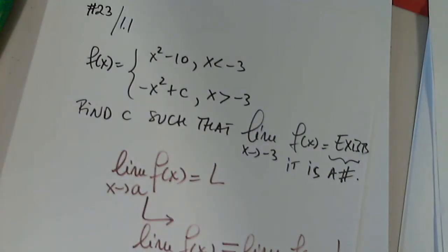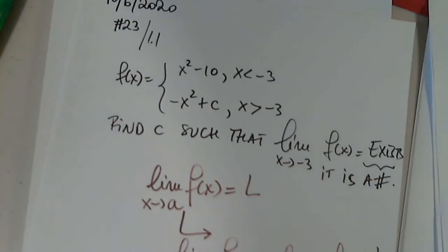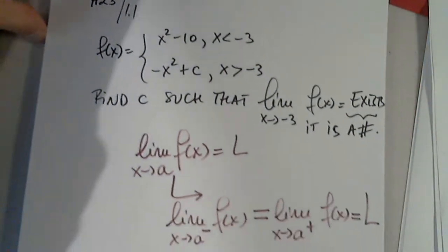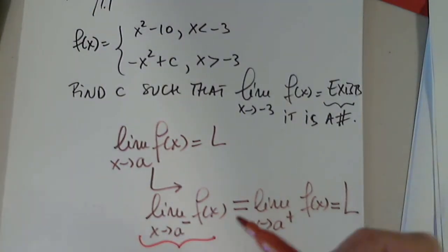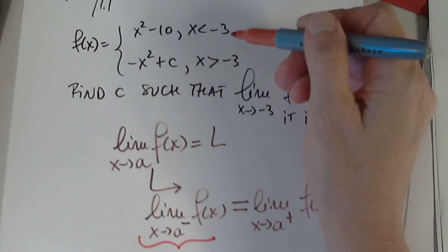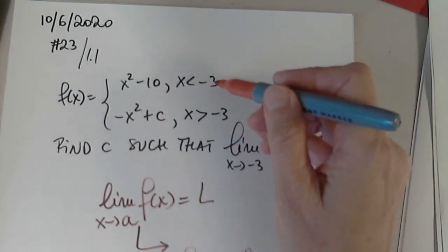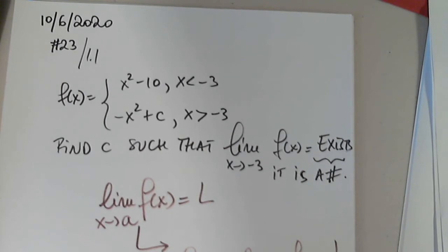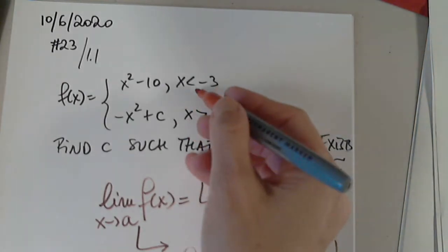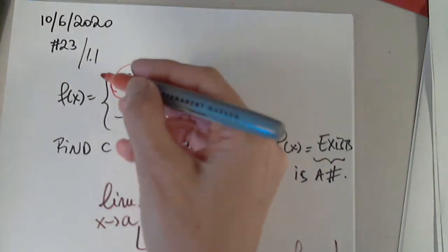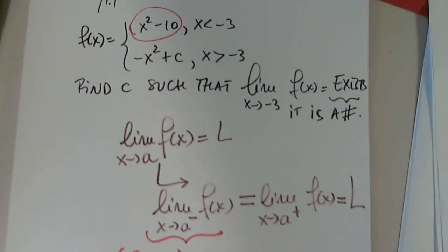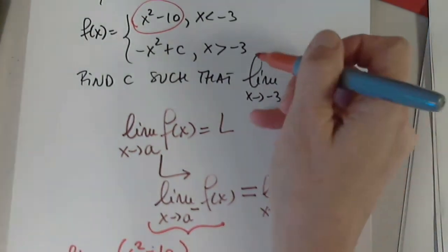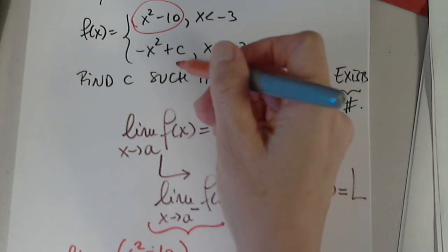The function doesn't have to be defined there, but both sides have to approach the same number. So keeping that in mind, I will have to determine this limit. From the left-hand side of negative 3, the limit as x approaches negative 3 from the left — I have to use the branch x squared minus 10. And the other one, the limit as x approaches negative 3 from the right — I have to use the other branch.